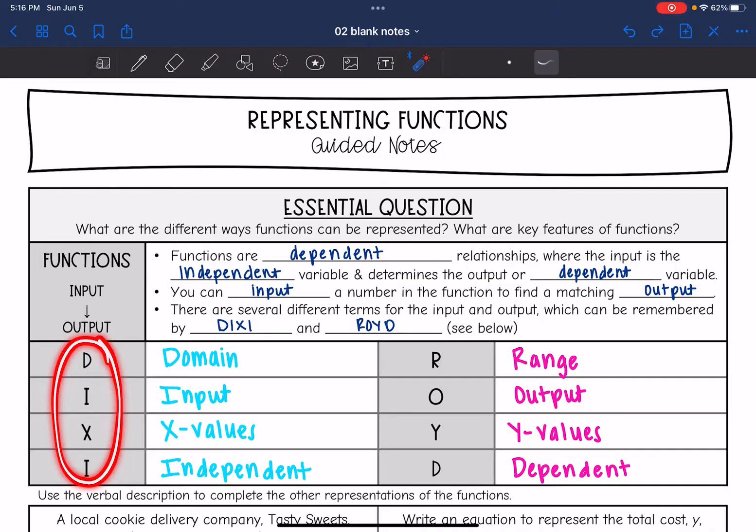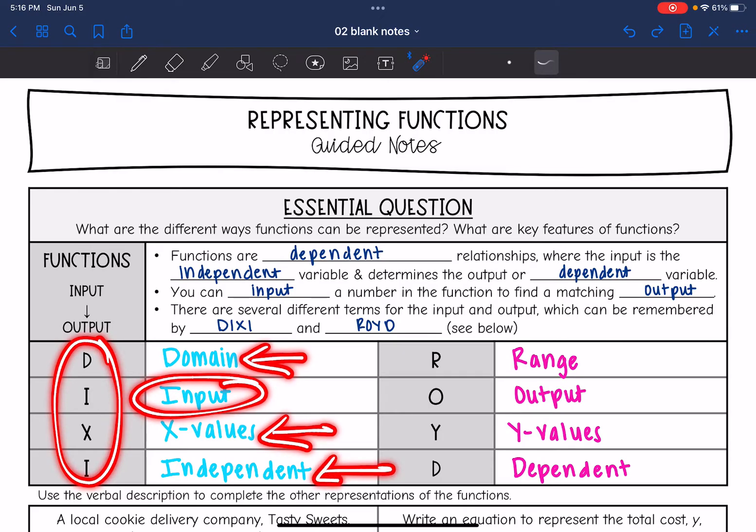So Dixie is all of the input values. That first I stands for input, the D stands for domain, the X stands for X value, and the I stands for independent. All of those mean input.